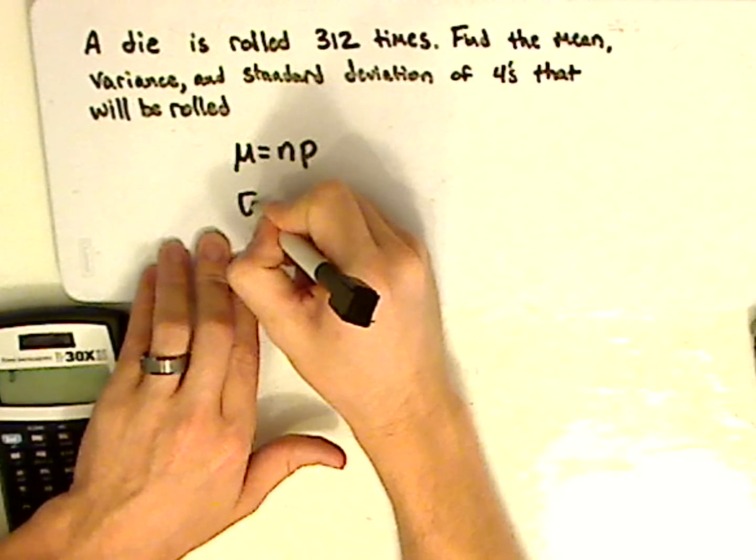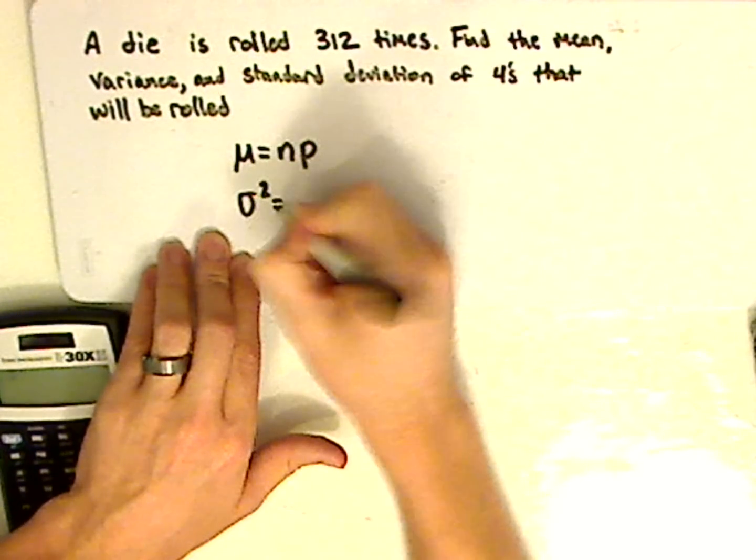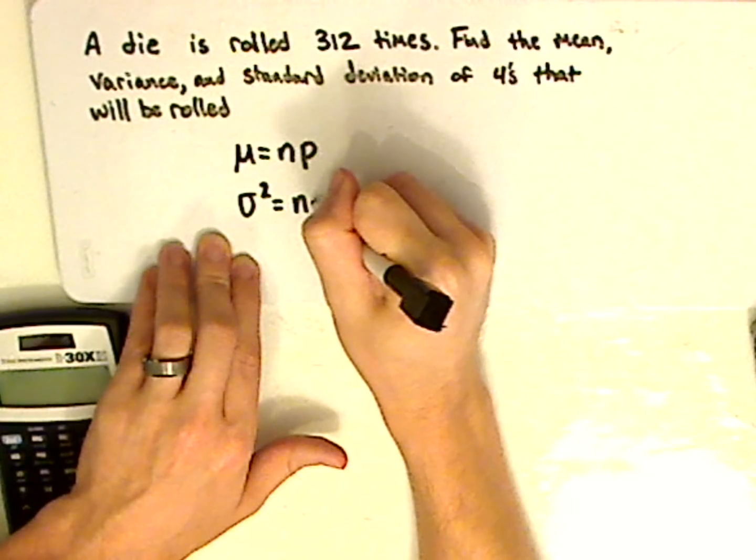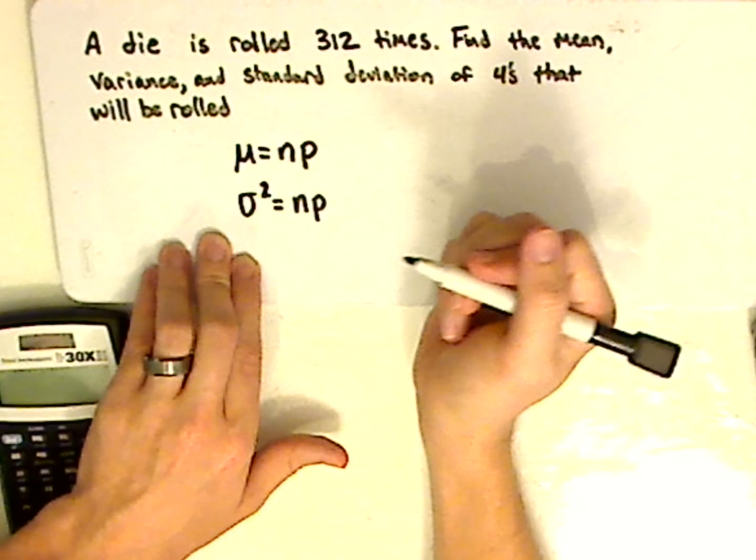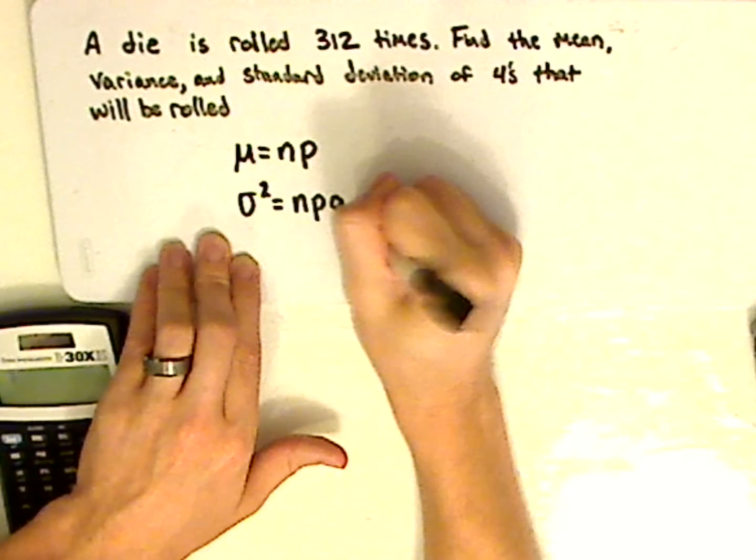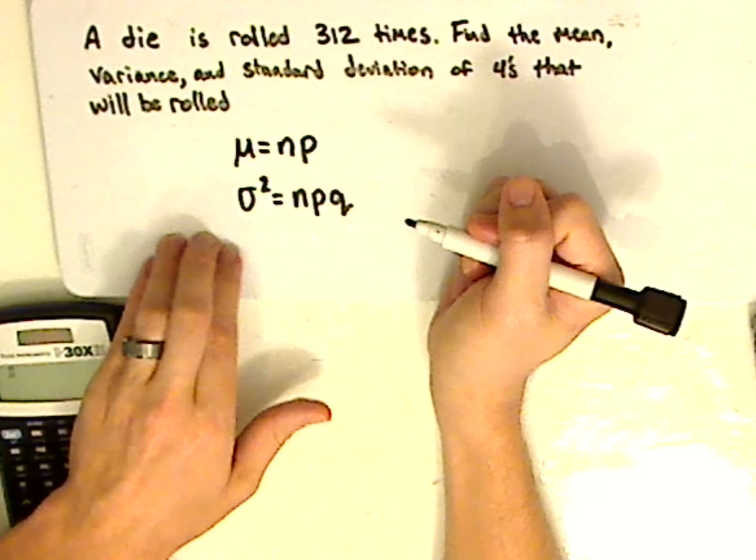Then you have the variance. To get the variance, it's n, the number of trials, times p, which is the probability of success, times q, which is the probability of failure.